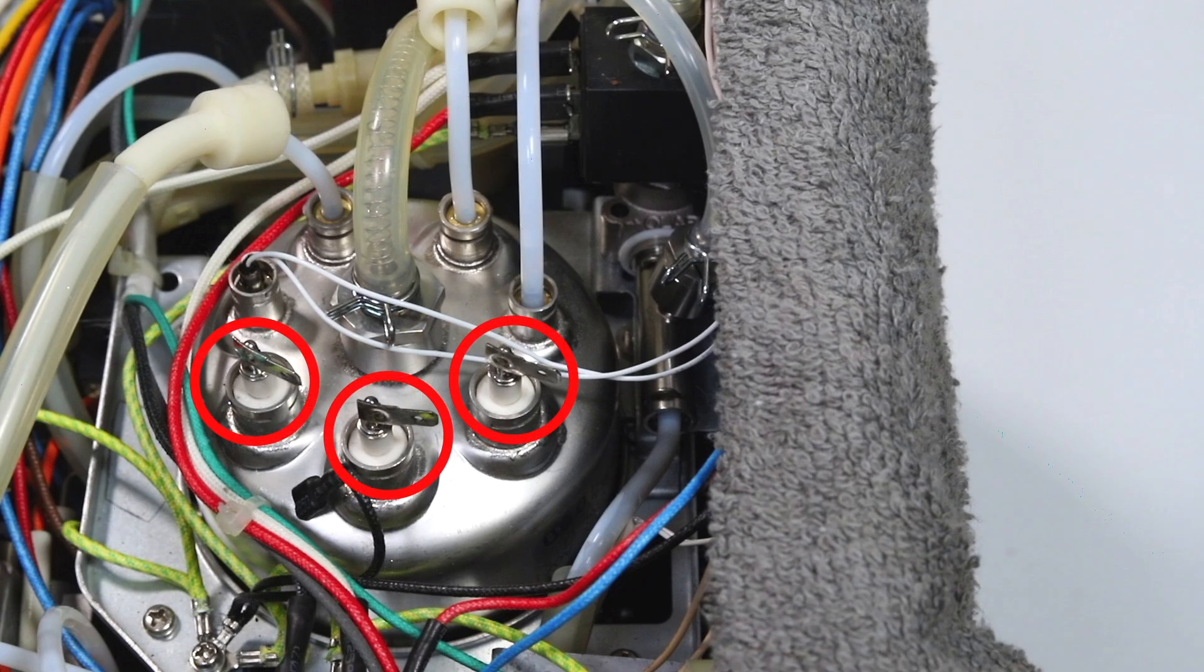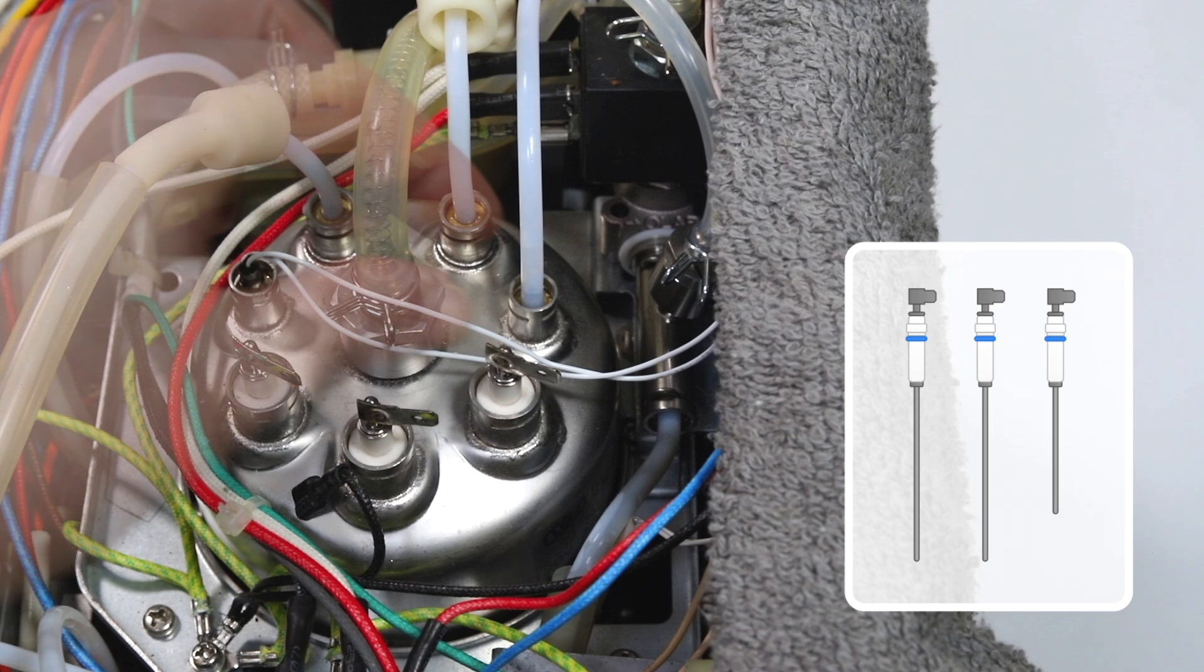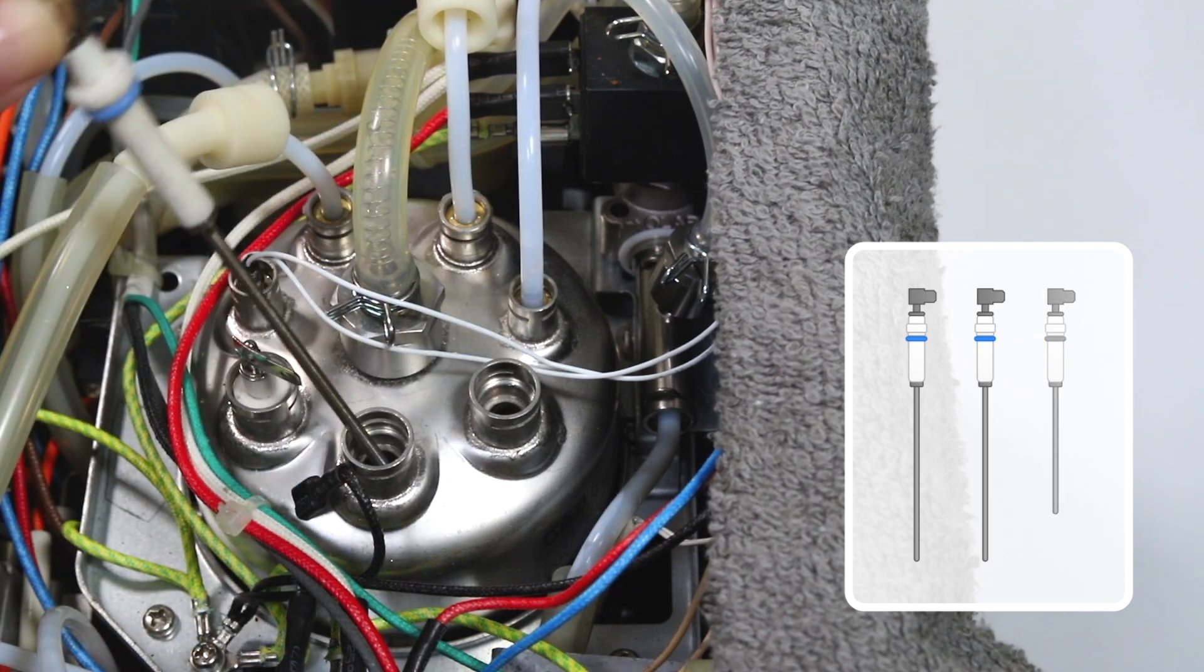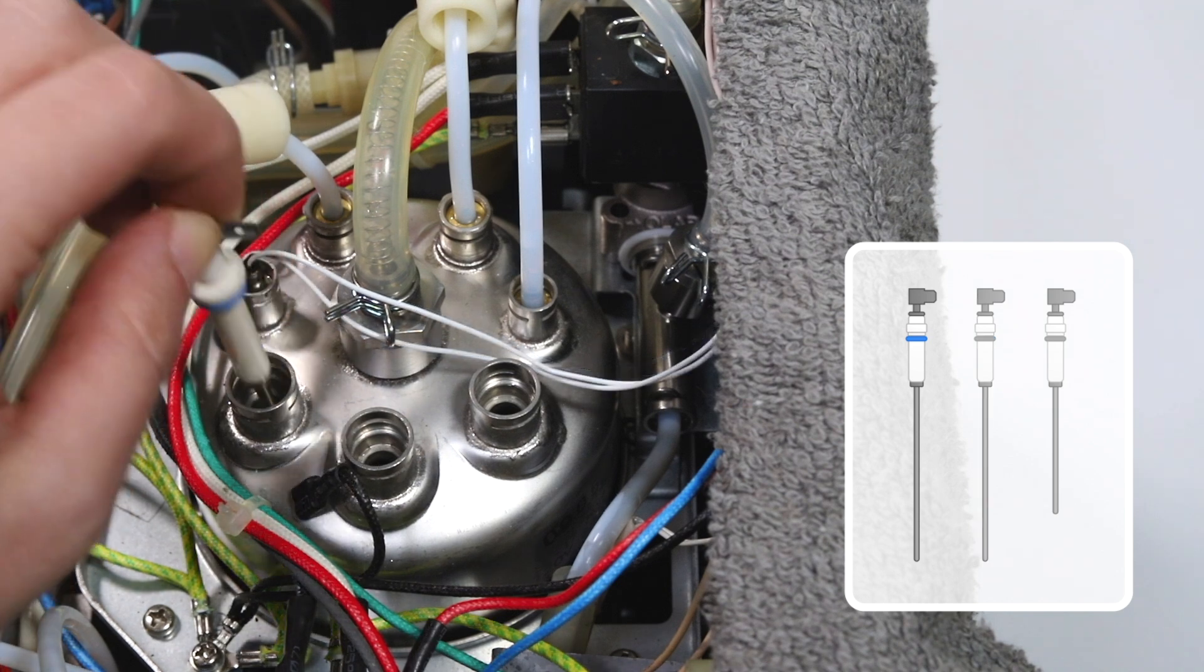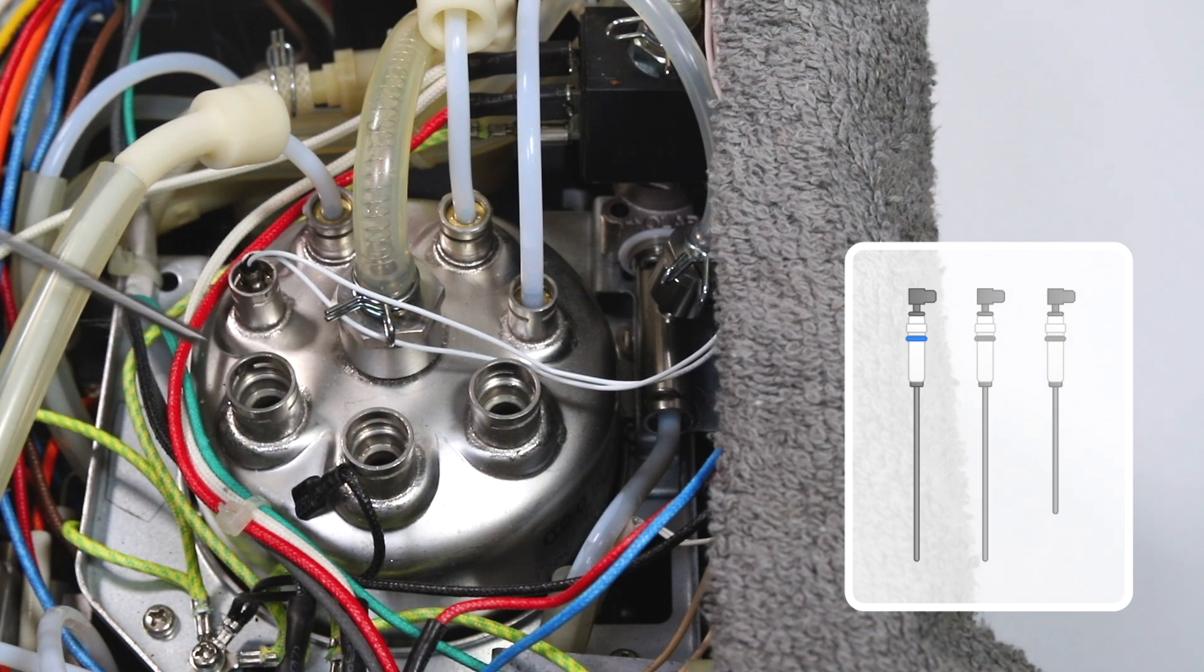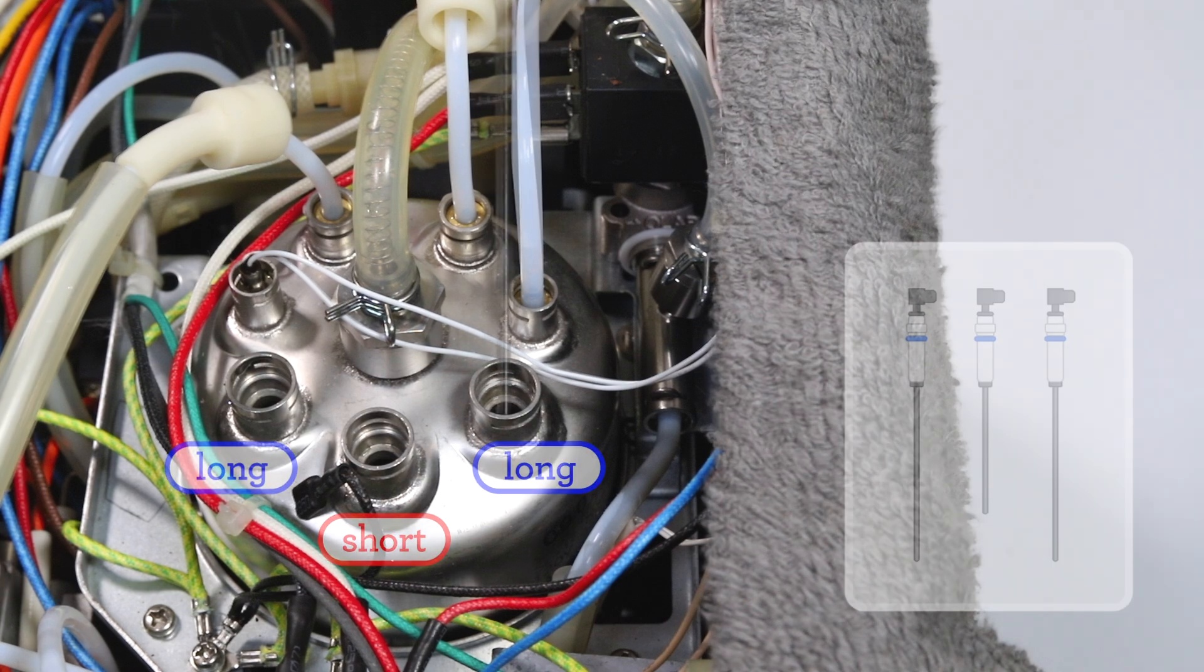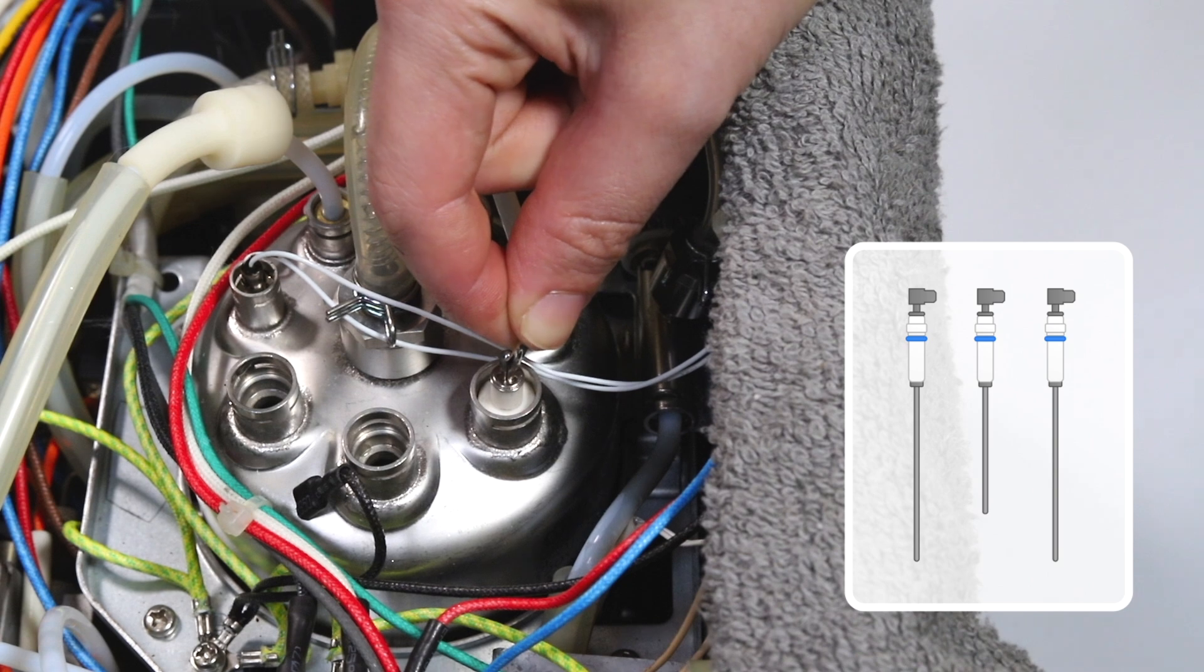To replace the water probes, first remove the old probes from each outlet. Then insert the replacement water probes in the indicated order with the shortest water probe in the middle outlet.